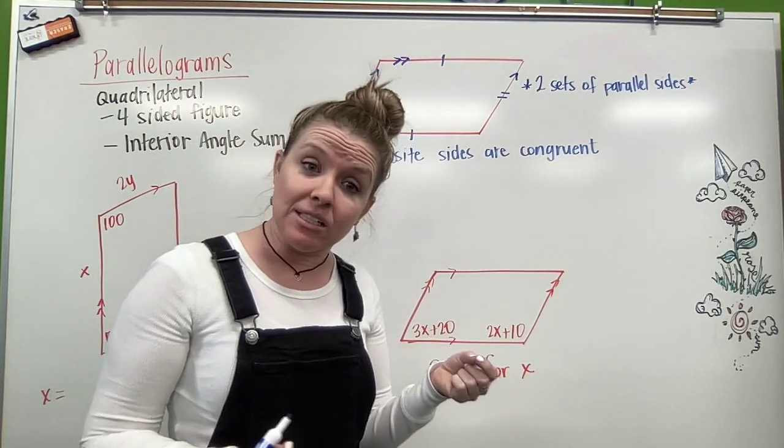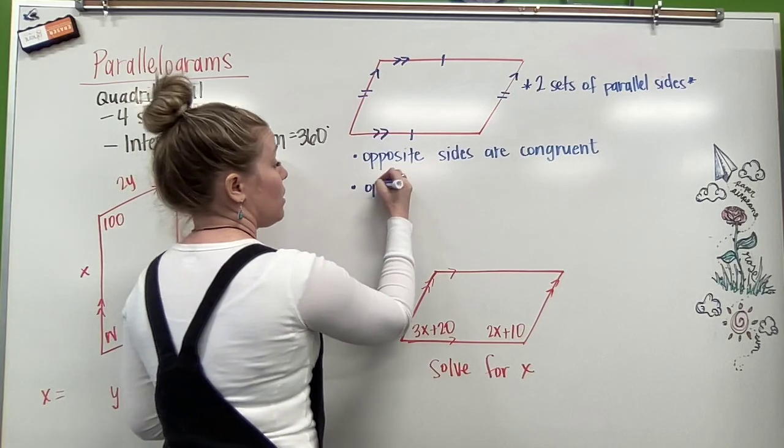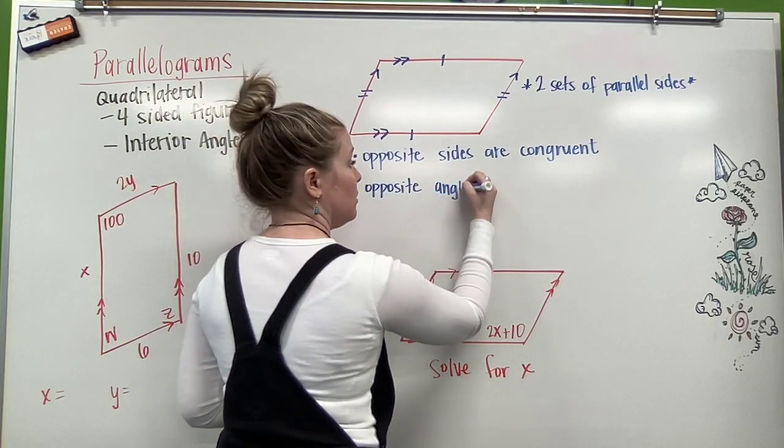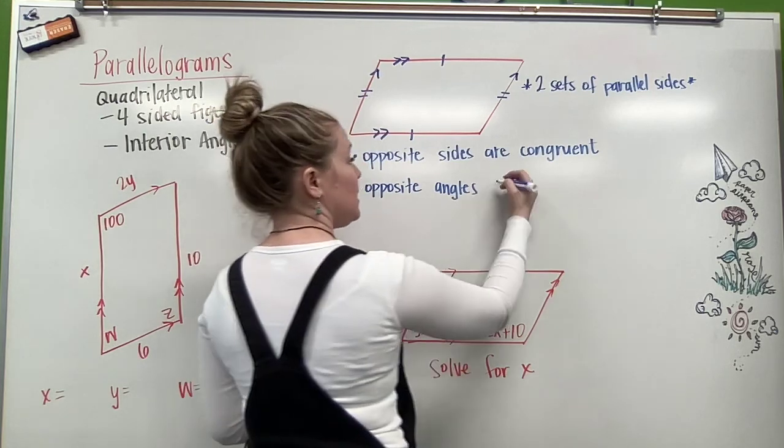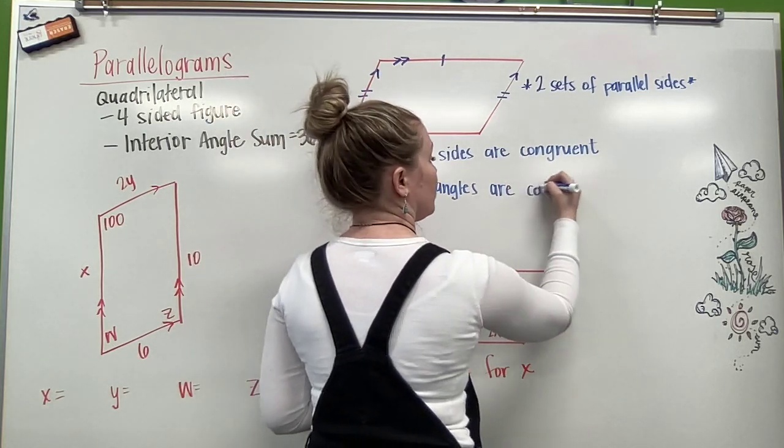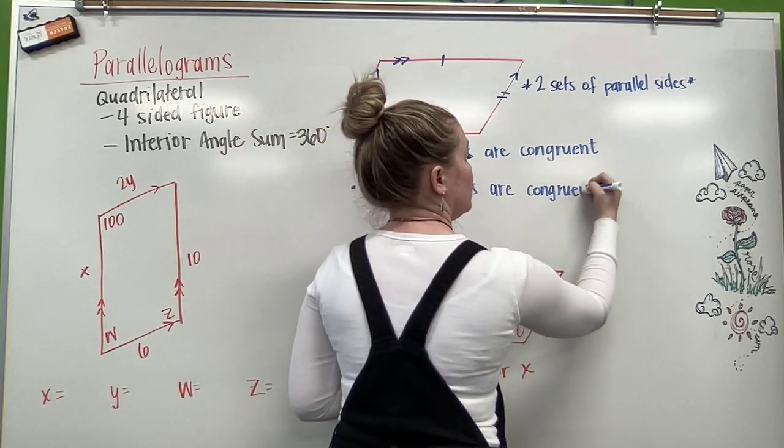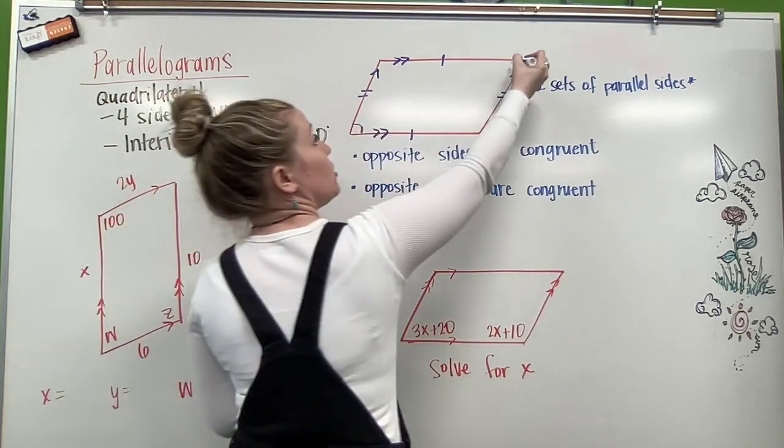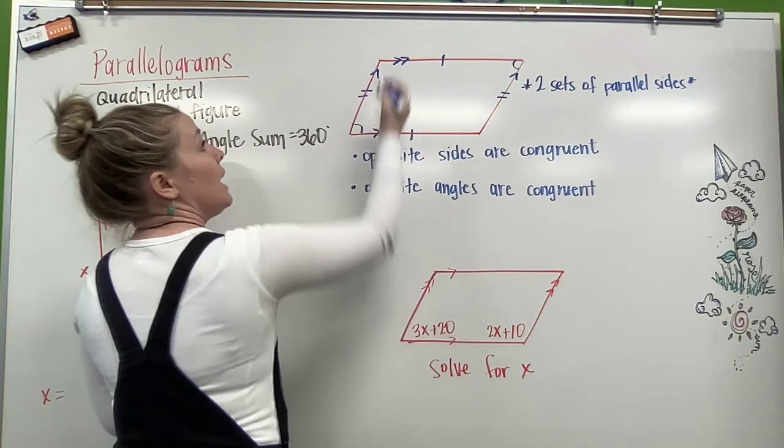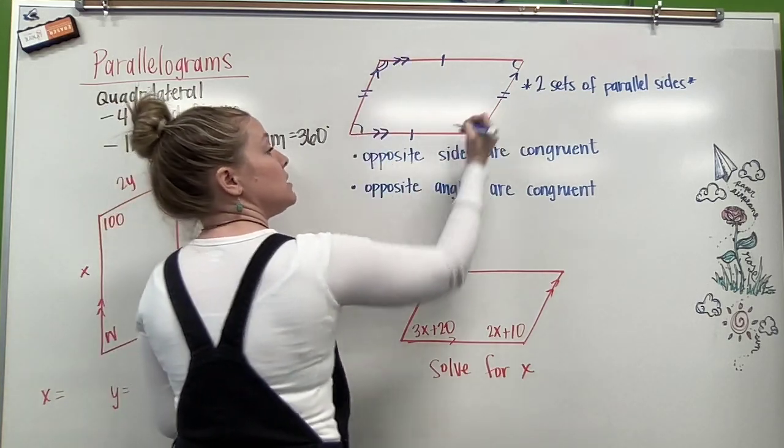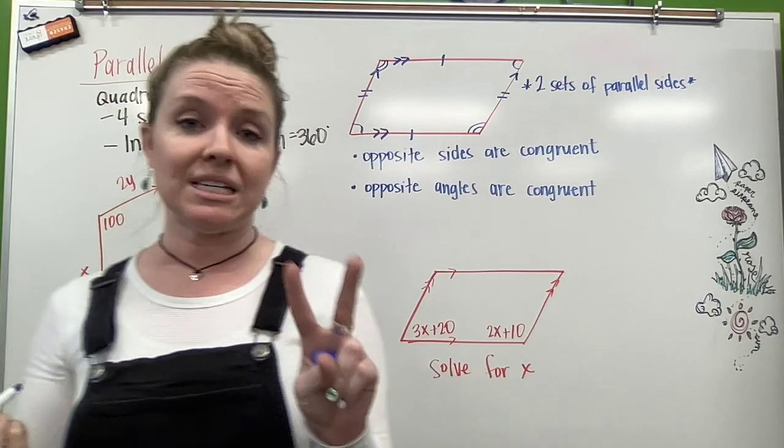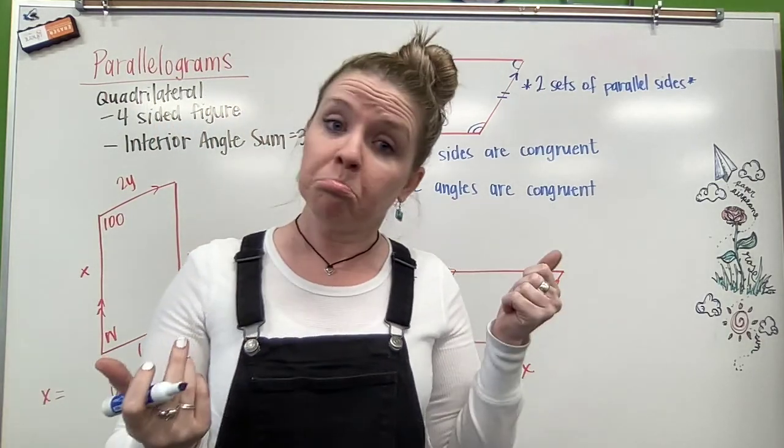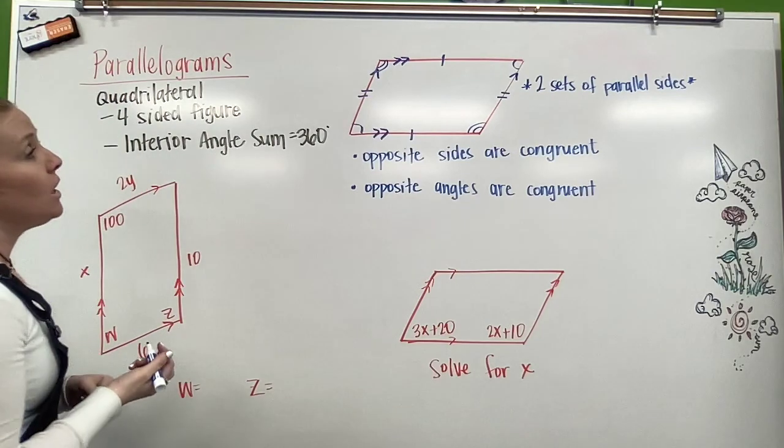We also know our opposite angles are congruent. So opposite angles are congruent. So if we look at our diagram here, this angle is congruent to this angle, and this angle is congruent to this angle. So we have two sets of opposite congruent angles. Pretty nifty, right?